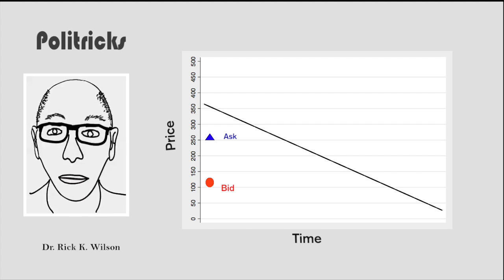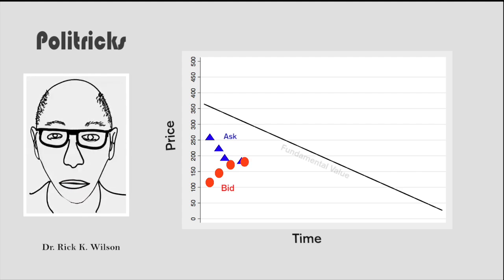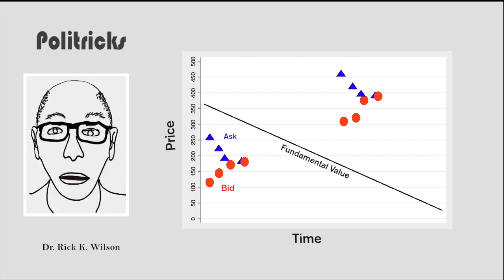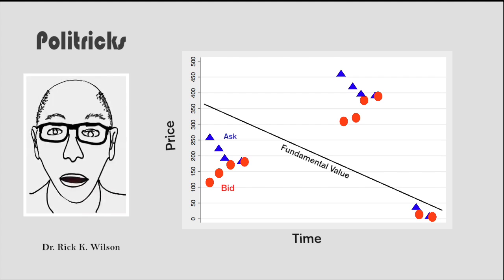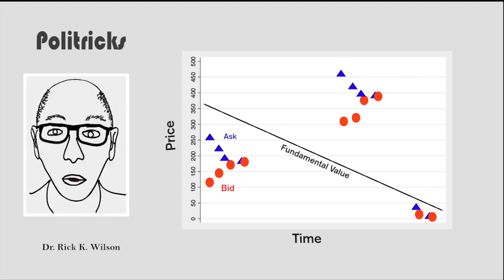For the first couple of trading periods, auction prices fall below what's known as the fundamental value of the asset. By the fourth period, prices rise well above the fundamental value, and in many markets continue to climb higher into the last few periods. At that point, of course, the market crashes. Those holding high-priced shares lose a lot of money as dividends return little. Those who sell their shares at the peak realize huge profits. The trick, however, is to know when to sell.